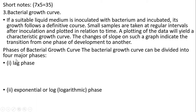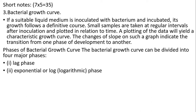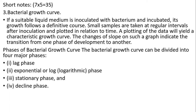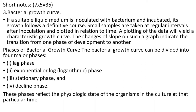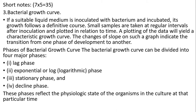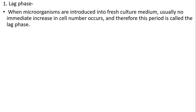The four phases are: first, lag phase; second, exponential or logarithmic phase; third, stationary phase; and fourth, decline phase. These phases reflect the physiological state of organisms in the culture at that particular time. In the lag phase, when microorganisms are introduced into fresh culture medium, usually no increase in cell number occurs — this period is called the lag phase.